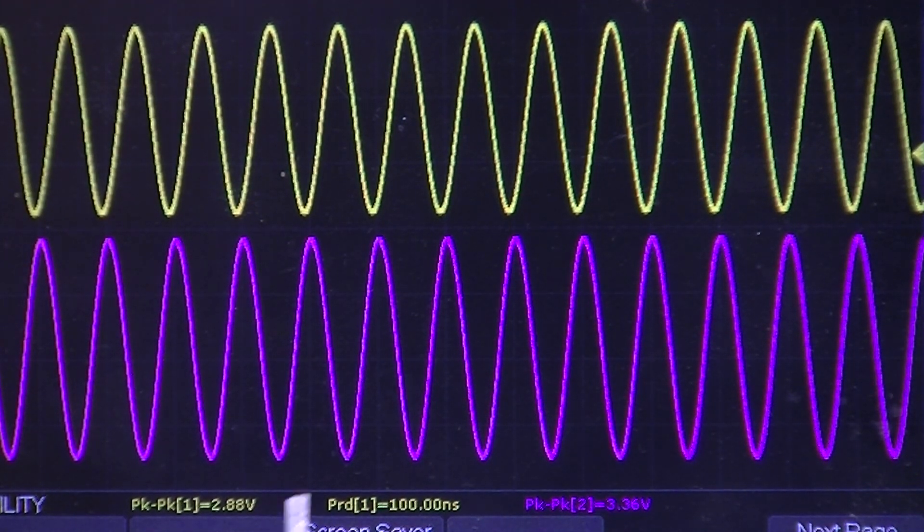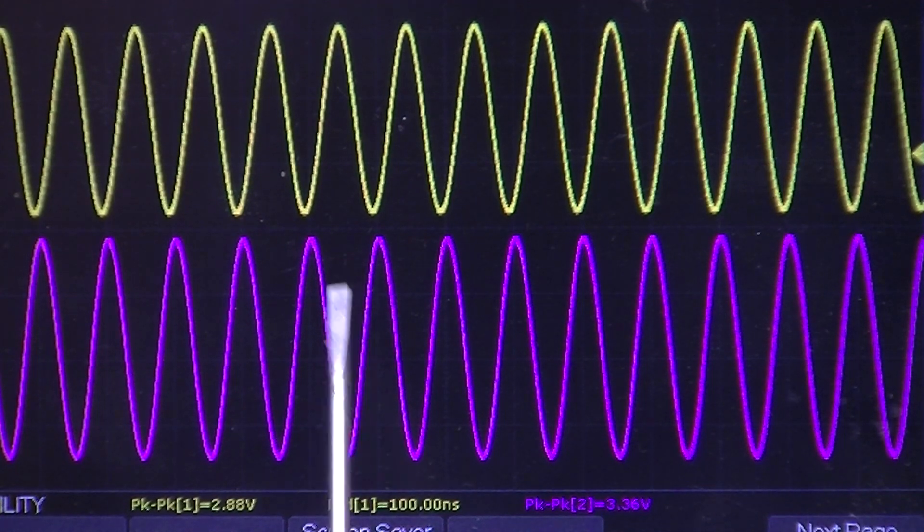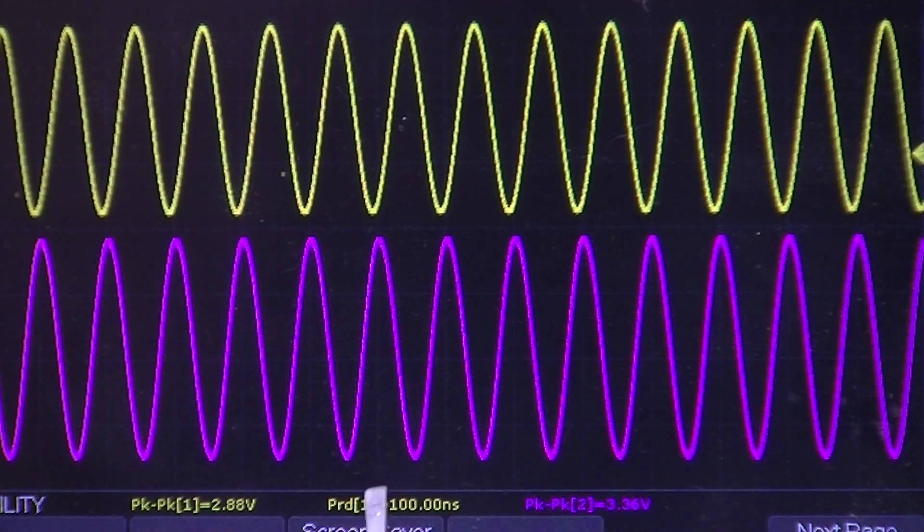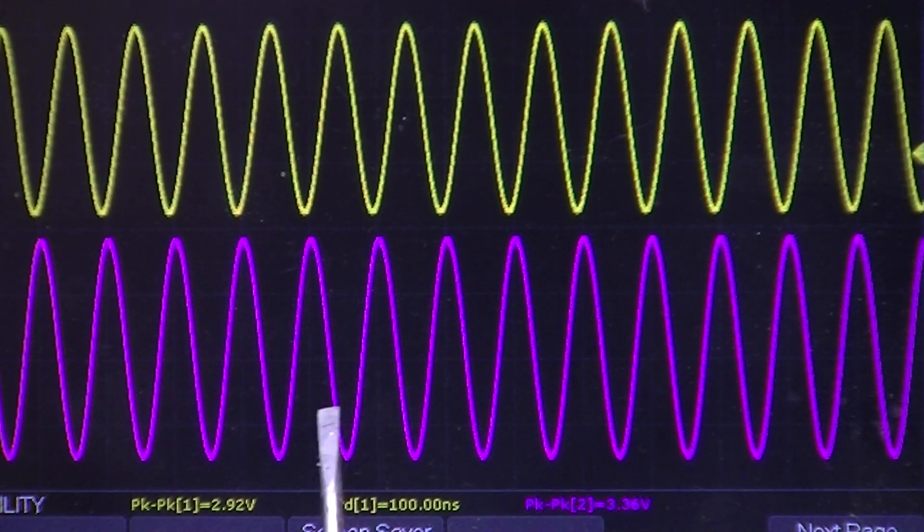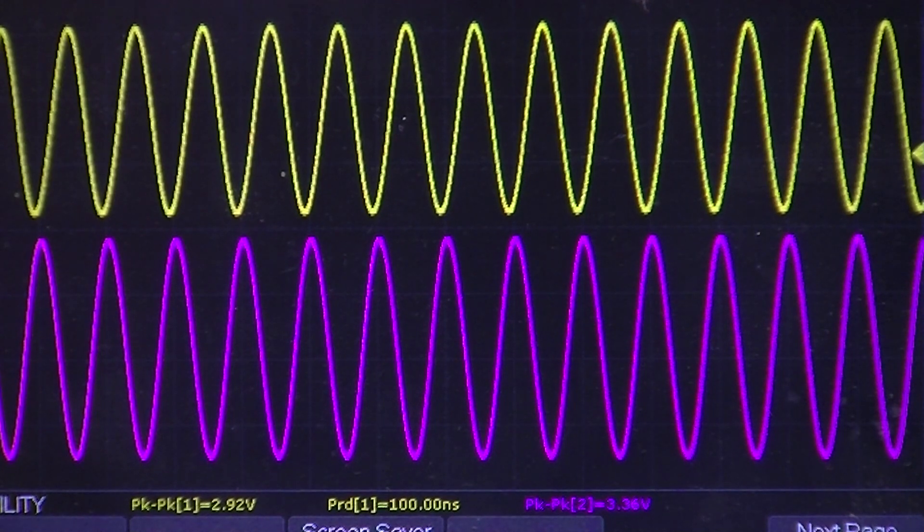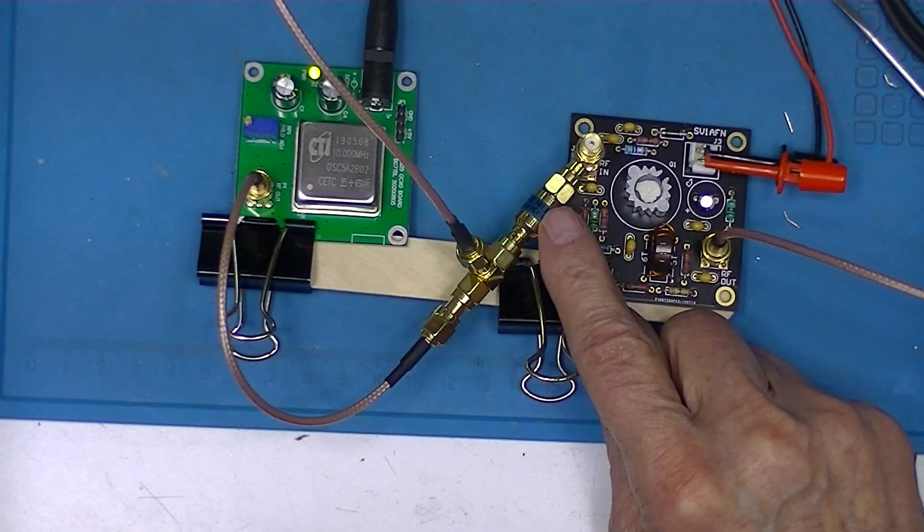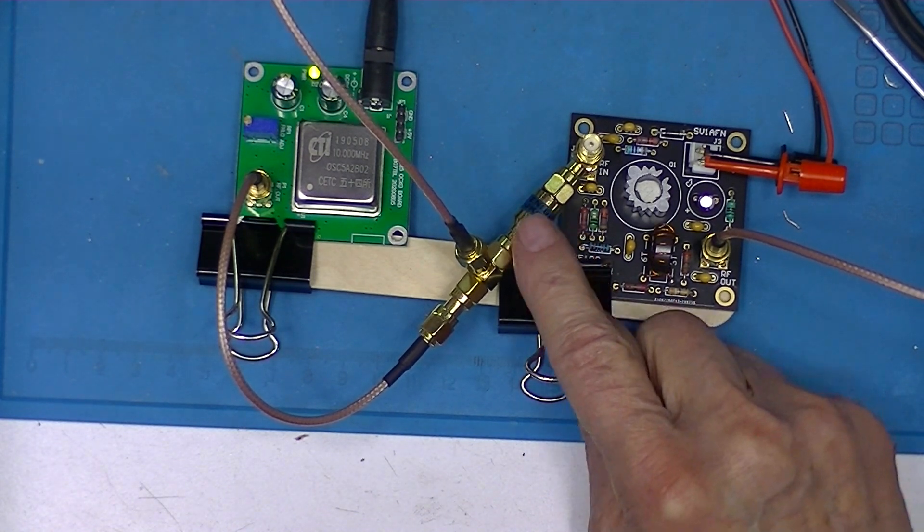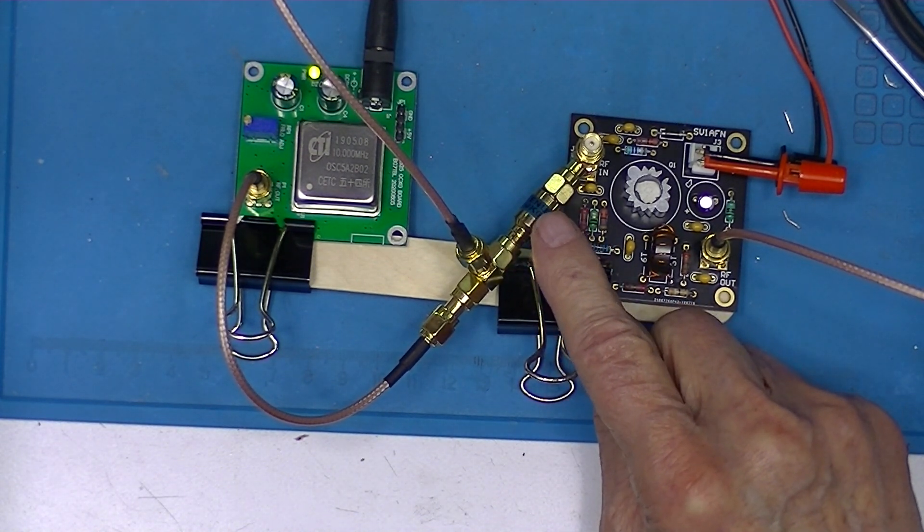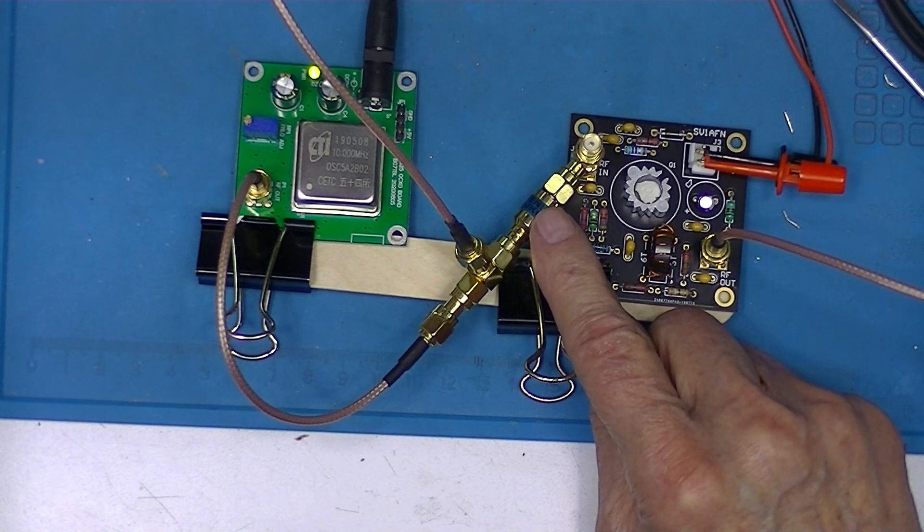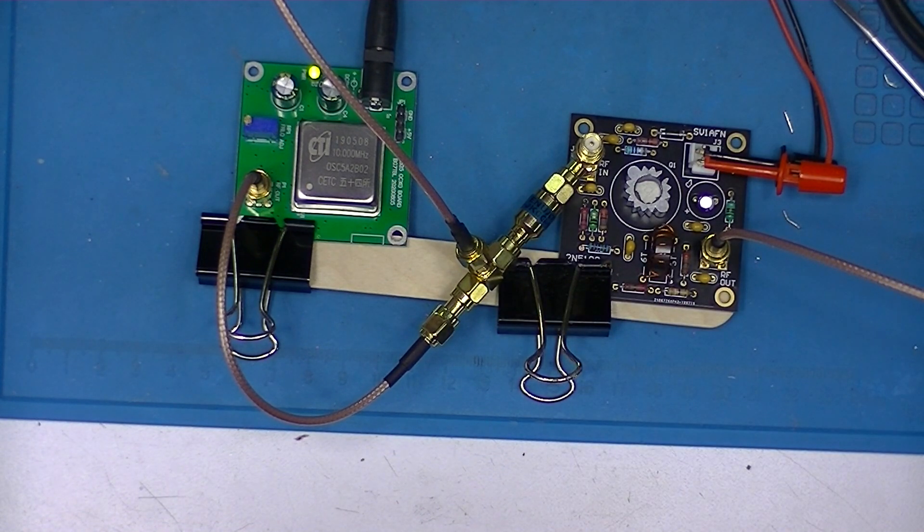And the output from the amplifier is 3.36, so there's not much voltage gain there, but it certainly will buffer the 10 megahertz oscillator for many loads imposed externally. I may replace this 15 decibel attenuator with a 10, although the 15 certainly provides a nice sine wave output.